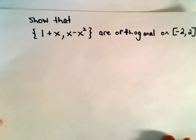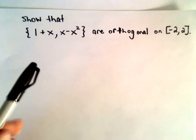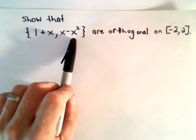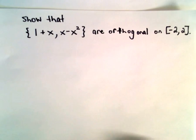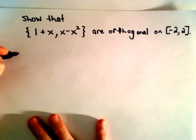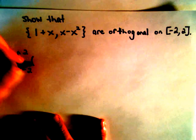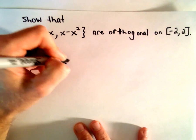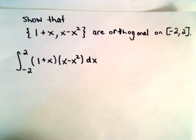Here's a very quick, simple example: show that the functions (1 + x) and (x - x²) are orthogonal on the interval negative two to two. All we have to do is integrate from negative two to two — just multiply those functions together, calculate the definite integral, and we had better get zero if they are in fact orthogonal.